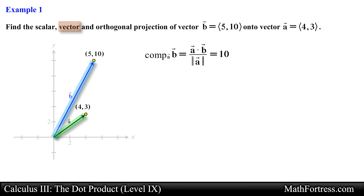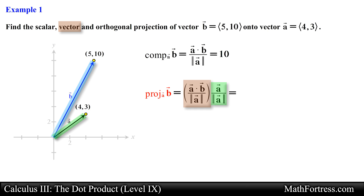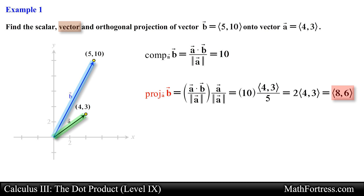Next, let's find the vector projection of vector b onto vector a. This vector can be found by taking the scalar projection and multiplying it by the unit vector in the direction of vector a. Substituting the appropriate values and simplifying, we obtain the following vector. Notice that this vector points in the same direction as vector a and has a magnitude equal to 10, the same value as the scalar projection.